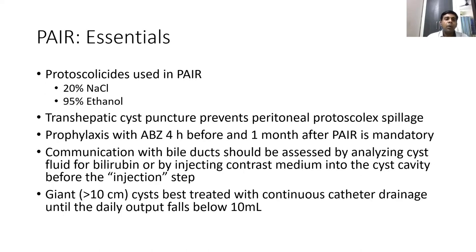The PAIR steps are: percutaneous puncture under ultrasound guidance (transhepatic approach to avoid spillage), aspiration of cyst fluid, injection of scolicide (20% hypertonic saline or 95% alcohol) for 10–15 minutes, then re-aspiration. Risks include missed biliary communication causing cholangitis, incomplete evacuation causing secondary hydatidosis or recurrence, and anaphylaxis from spillage. Albendazole prophylaxis must be given prior. For large cysts, a modified 'SPARD' technique using a catheter for initial drainage and reassessment for biliary communication is recommended before proceeding with PAIR.